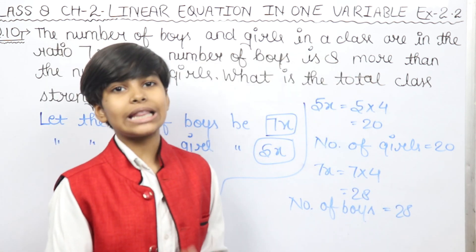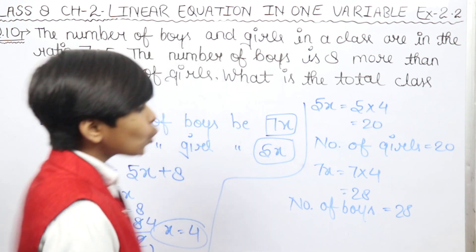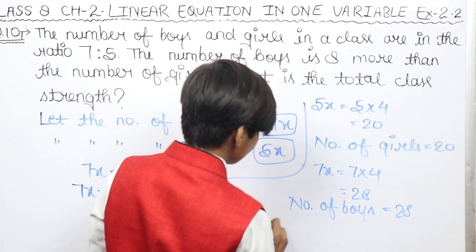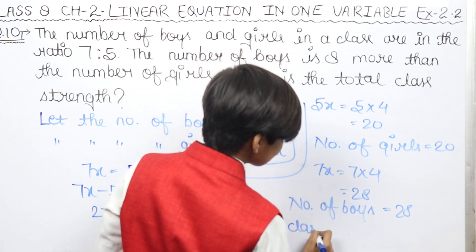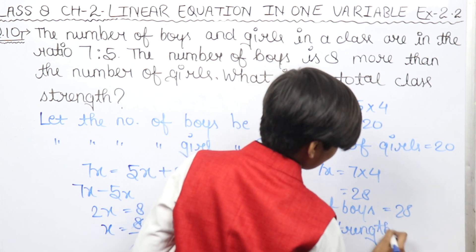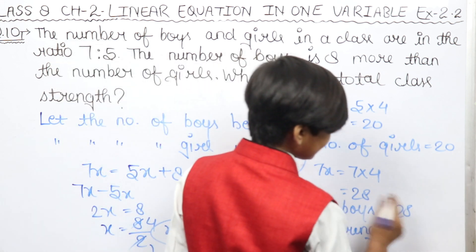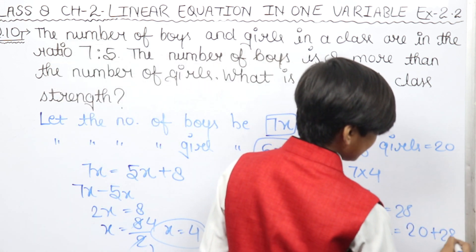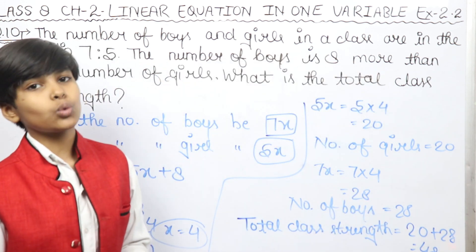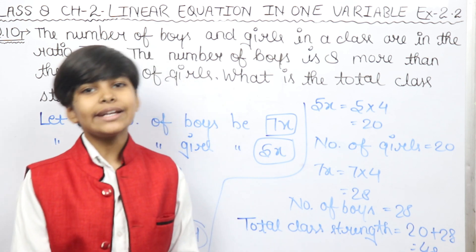Now, how many girls and boys are there? We have been asked for the total class strength. To find the total, we add 20 plus 28. The whole class has 48 students, with 20 girls and 28 boys.